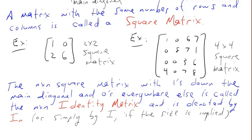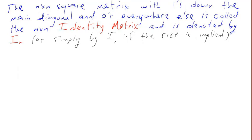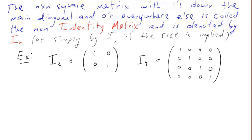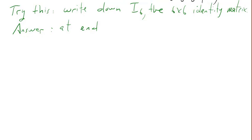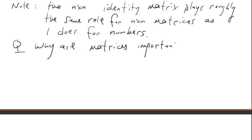The n by n square matrix with ones down the main diagonal and zeros everywhere else is called the n by n identity matrix, denoted by I sub n or simply I if the size is implied. Here are some examples: the 2 by 2 identity has ones down the main diagonal, zeros elsewhere. Here is the 4 by 4 identity. Identity acts roughly like a 1 for matrices. Try this: write down I6, the 6 by 6 identity. We'll check answers toward the end.